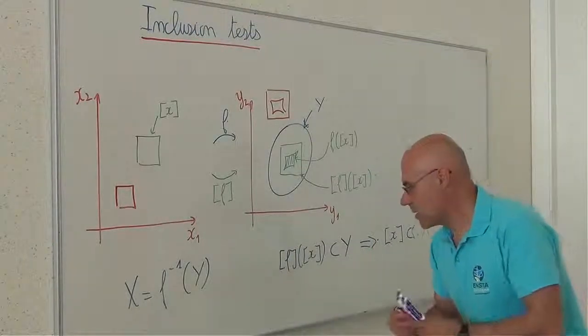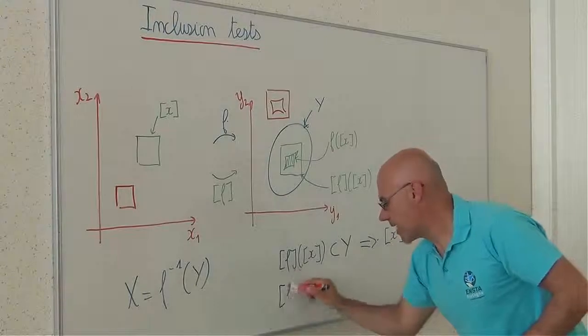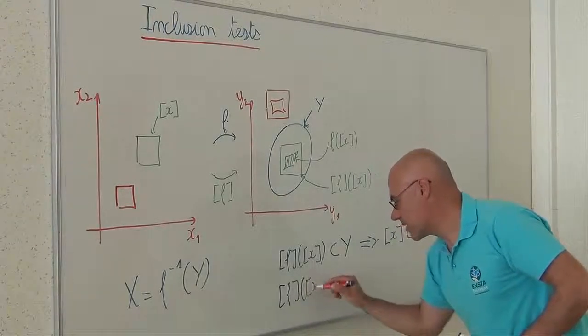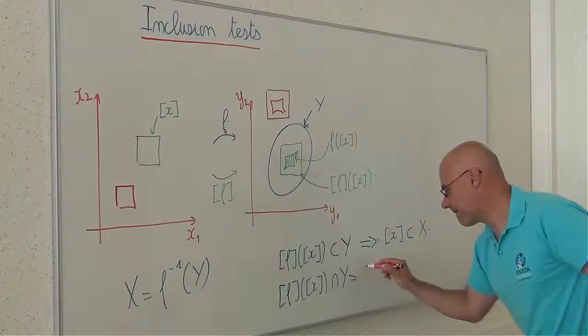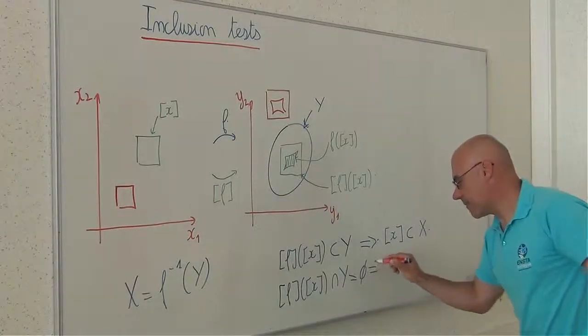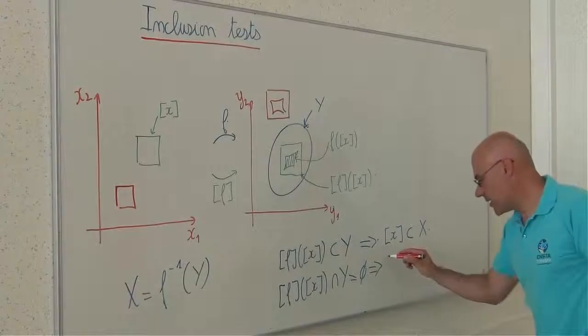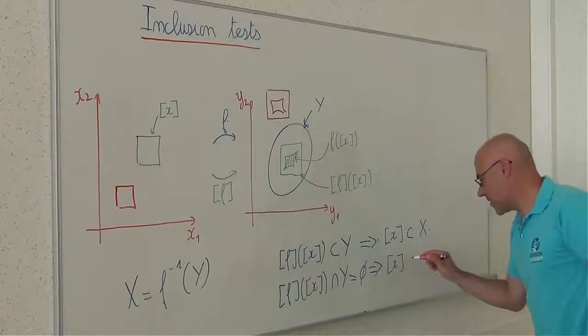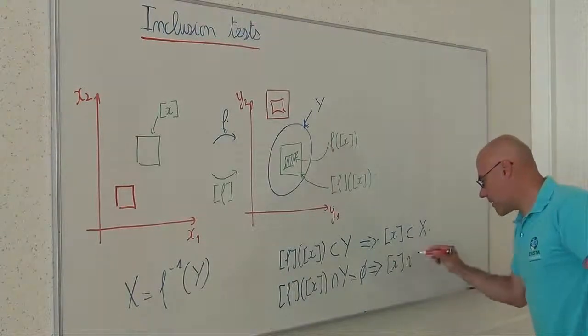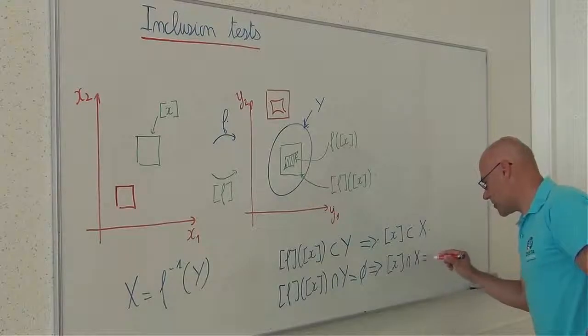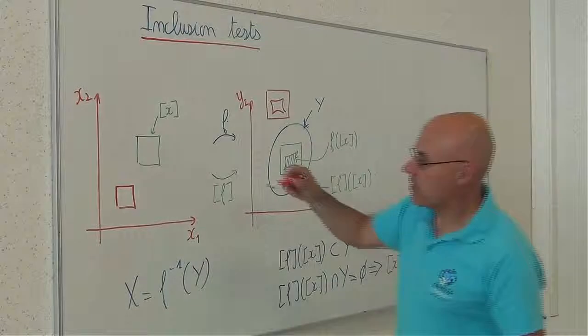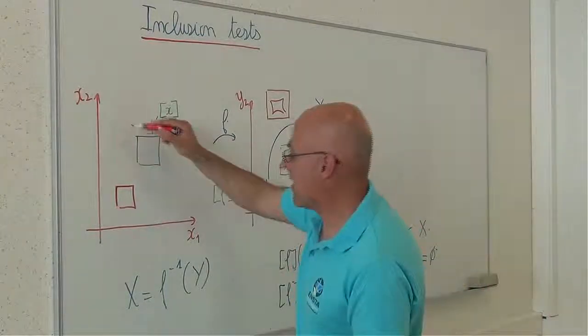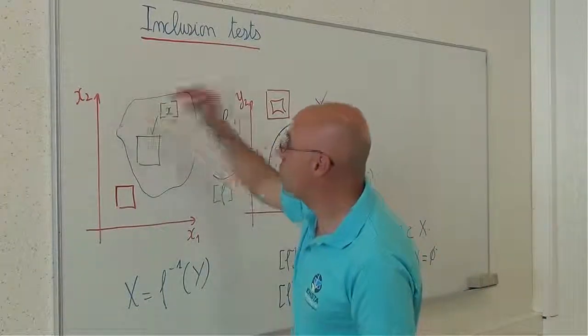If this image, F of X, does not intersect Y, then I can conclude that X does not intersect the solution set. So, if you prefer, the set X I want to characterize could be like this.